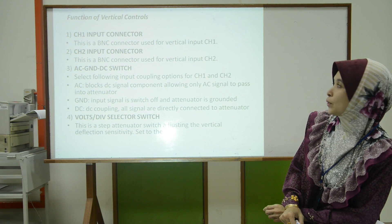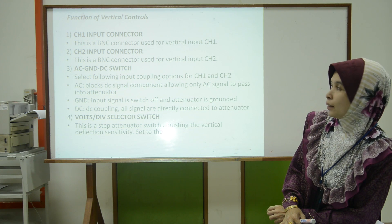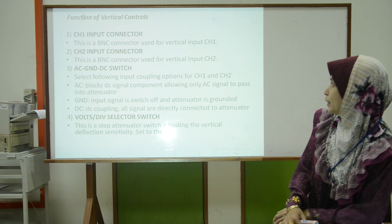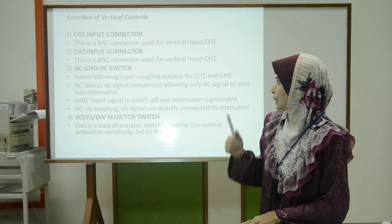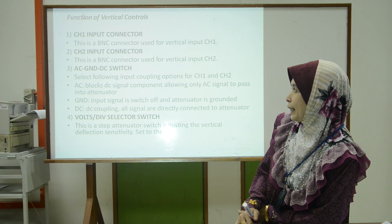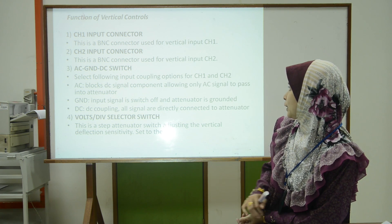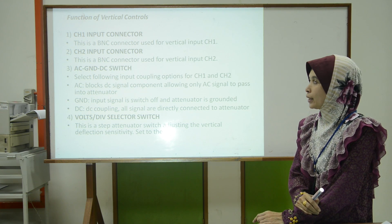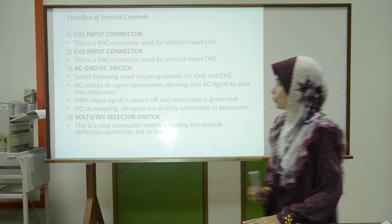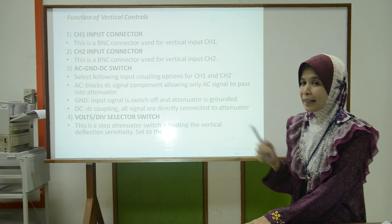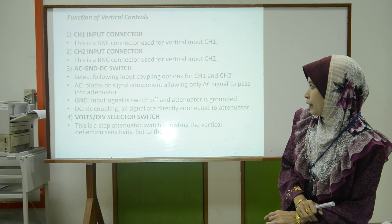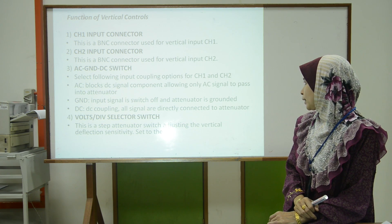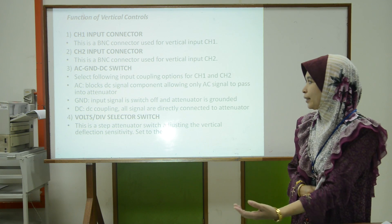For the vertical control: channel one input connector is a BNC connector used for vertical input channel one. Channel two input connector is a BNC connector for vertical input channel two. The AC, GND, DC switch — we normally use AC. GND, or ground, is used when the input signal is switched off and the amplifier is grounded.